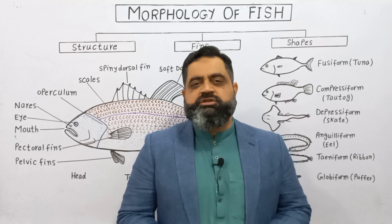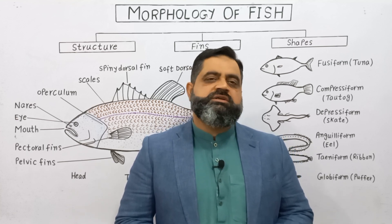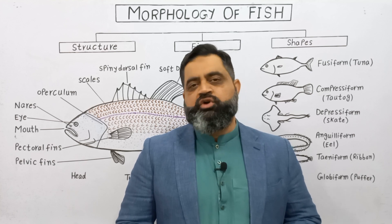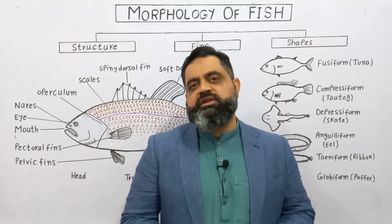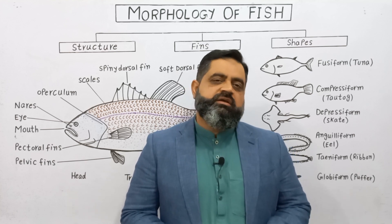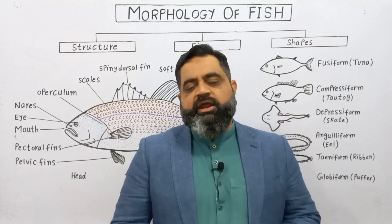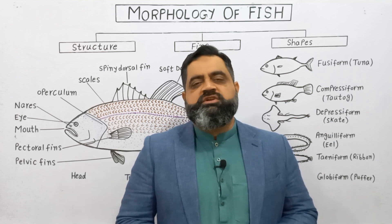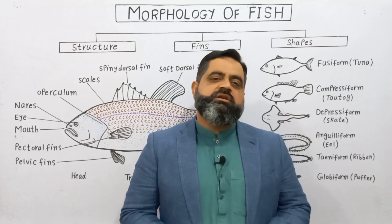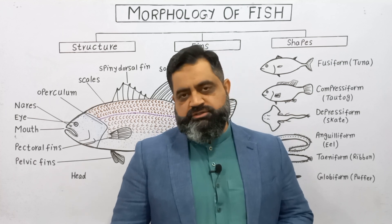In external morphology we usually discuss the structures of external body parts of a living organism, and internal morphology or anatomy is where we study the internal structure of a living organism.